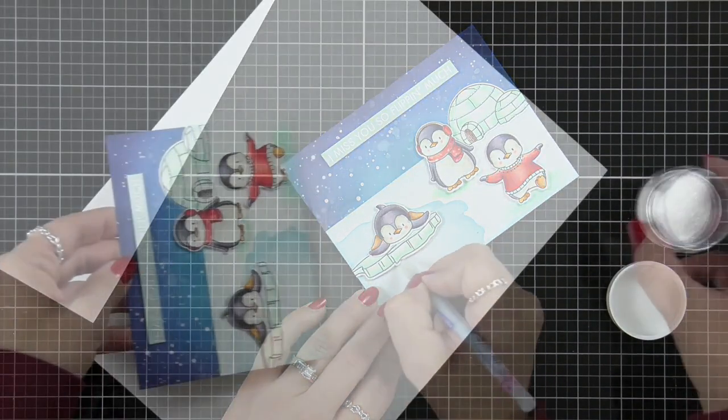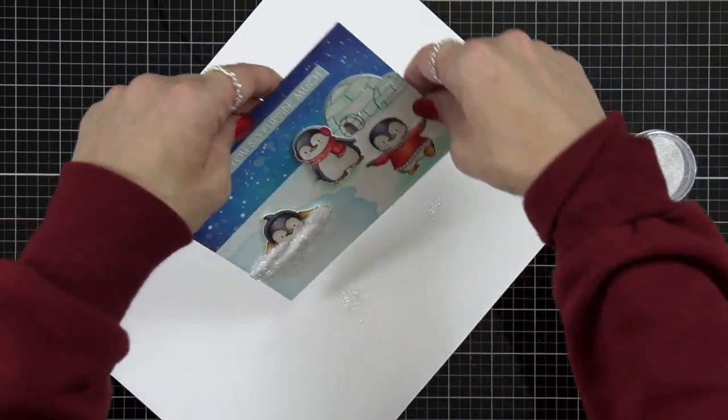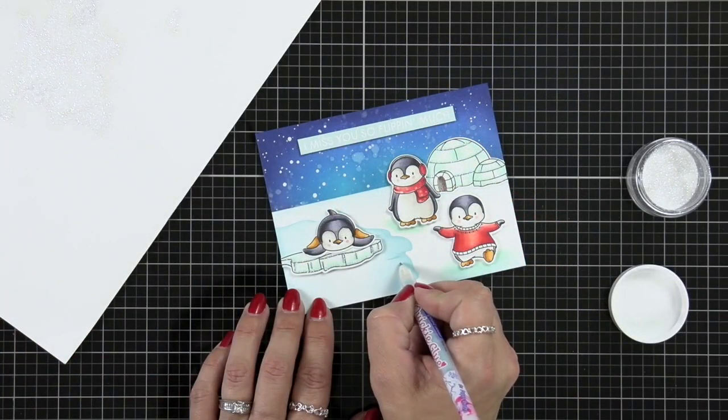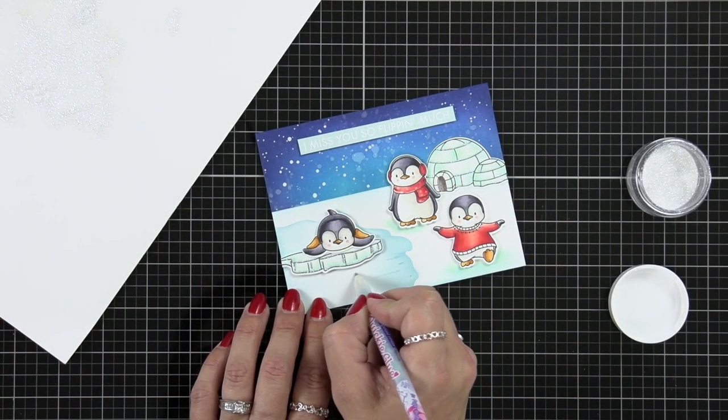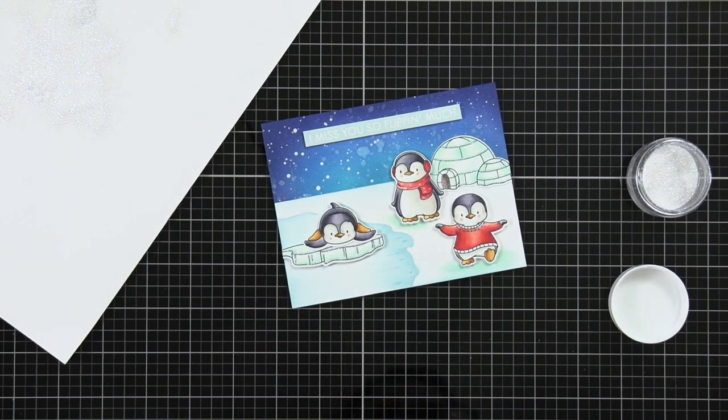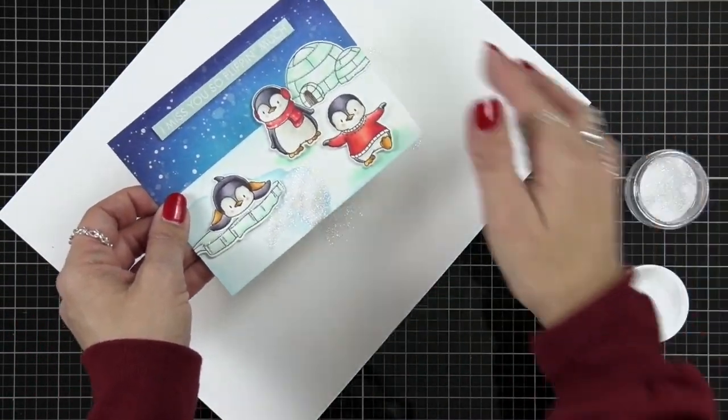Now when the glue goes on it is blue so you can see it really well. I'm sprinkling on the glitter and tapping off that excess onto some scratch paper. Now because my background may still be a little wet the glitter might stick to that but after everything is dry it's only going to stick to the glue and you can brush away any excess that might be left behind.